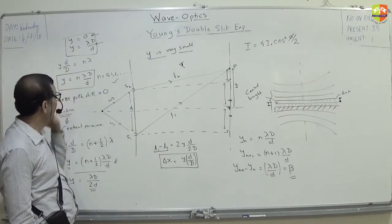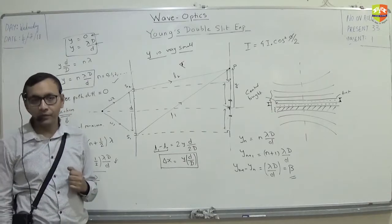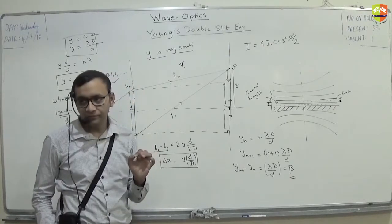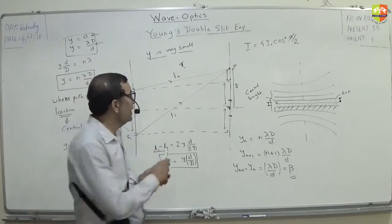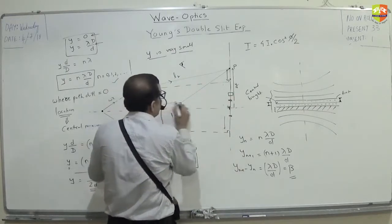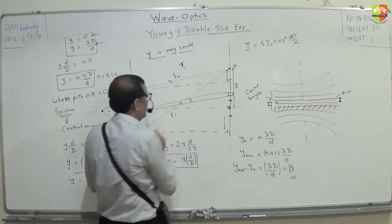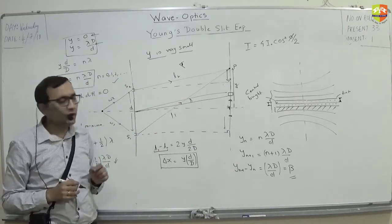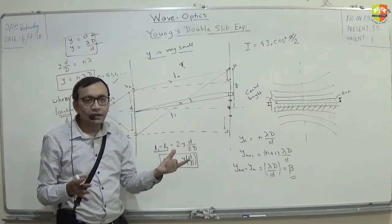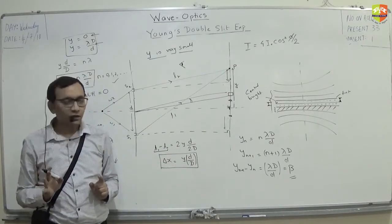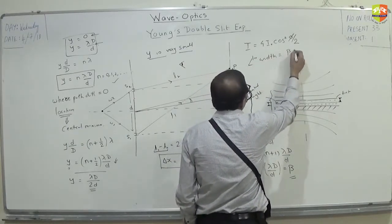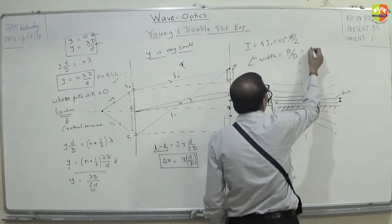There is also something called angular width of the fringe — how much angle a fringe width subtends. Since the fringe is very near to the center line, angular width equals fringe width divided by capital D. So angular width of the fringe = β/D = λ/d.